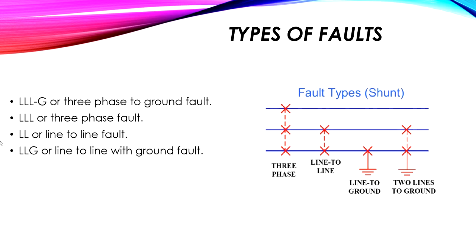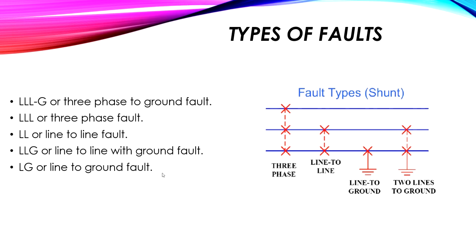We also have the line-to-line-to-ground fault, where two lines and the ground are all connected together. Another type is the line-to-ground (LG) fault, meaning one phase is connected with the ground. The three-phase-to-ground fault is called a symmetrical fault, while the other types — line-to-line, line-to-line-to-ground — are called unsymmetrical faults, because they involve only one or two phases.